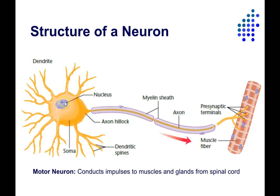This particular neuron is called a motor neuron because it conducts impulses to muscles and glands. If this were a motor neuron controlling a muscle in my finger, the soma and dendrites would be inside my spinal cord, receiving information from my brain. The axon would be microscopic at the soma end but long enough to reach all the way down my arm, forming a nerve with lots of other axons — carrying the signal to move a particular muscle and telling it to contract.